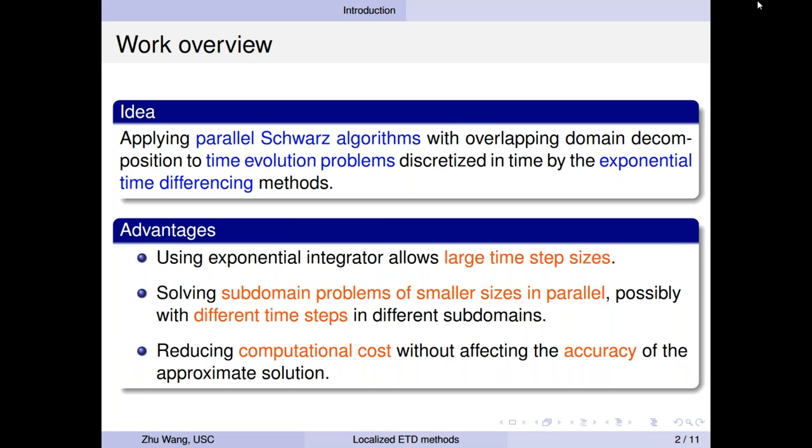Second, it solves subdomain problems of smaller size in parallel. And potentially, we could use different time step sizes in different regions. As a result, the method will reduce computational cost without affecting the accuracy of the approximate solutions.